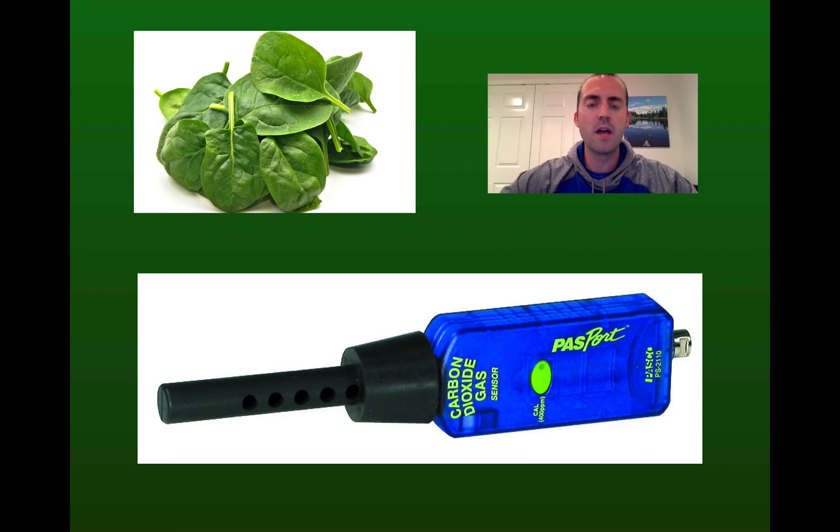So in this investigation we'll be using spinach leaves as our plant organism. To measure photosynthesis we'll be using a CO2 gas sensor made by PASCO. This sensor measures the amount of carbon dioxide present in the air, and so we should see as photosynthesis occurs a decrease in the amount of carbon dioxide.